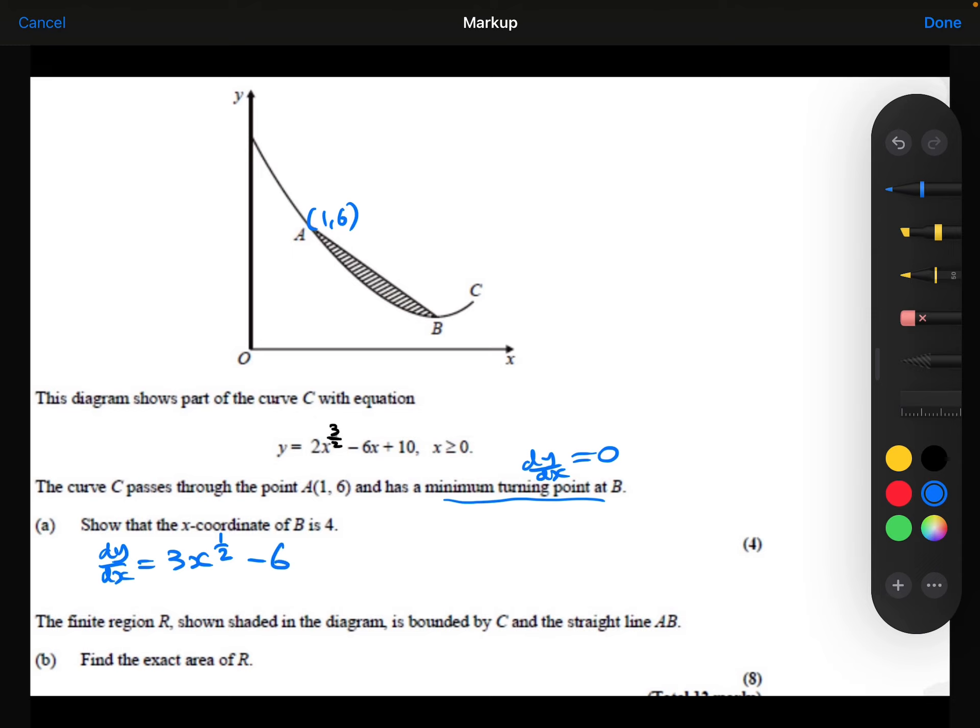So that's my gradient function, and I'm going to make that equal to 0 because we're looking for the minimum turning point. I'm going to add 6 to both sides here. I'm going to divide both sides by 3. And then if I square both sides to get rid of that square root, to get rid of the power of a half, I've shown that x is equal to 4 at point B.